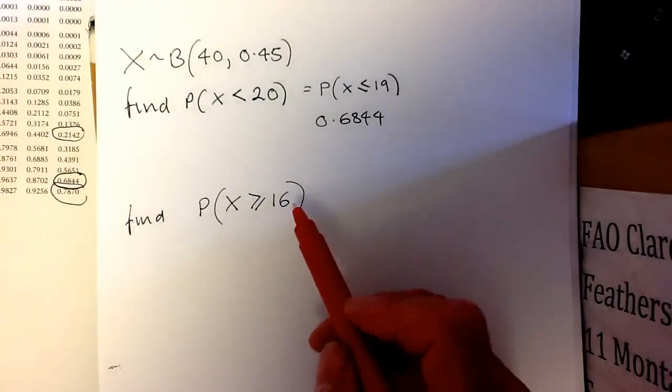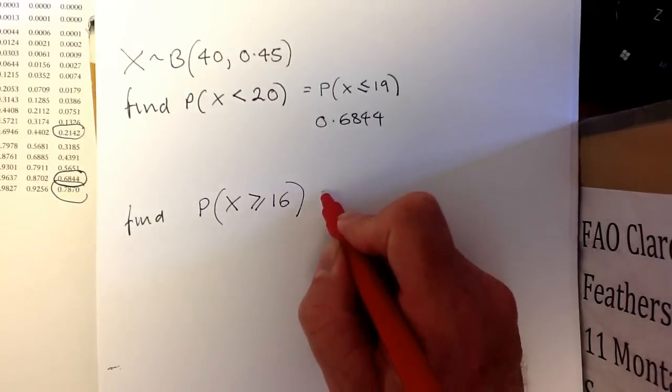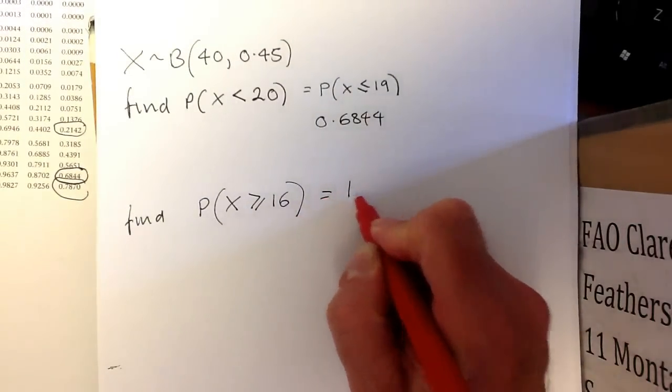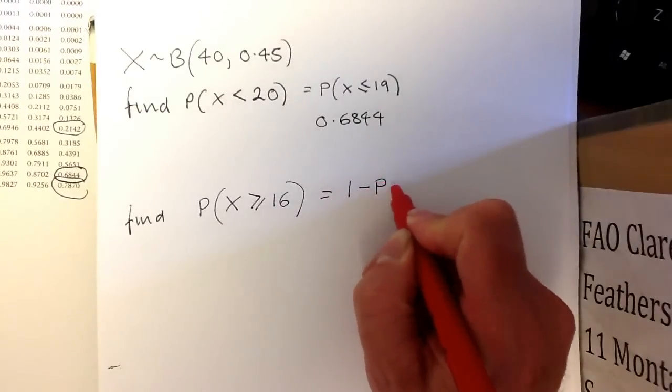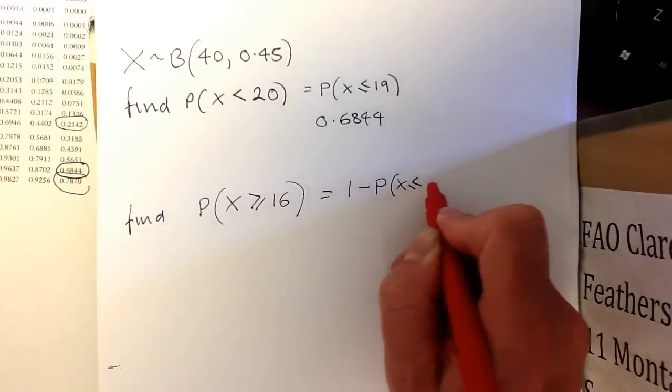The second question asks us to find the probability that X is greater than or equal to 16. Since the tables give less than or equal to values, this will be the same as 1 minus the probability that X is less than or equal to 15.